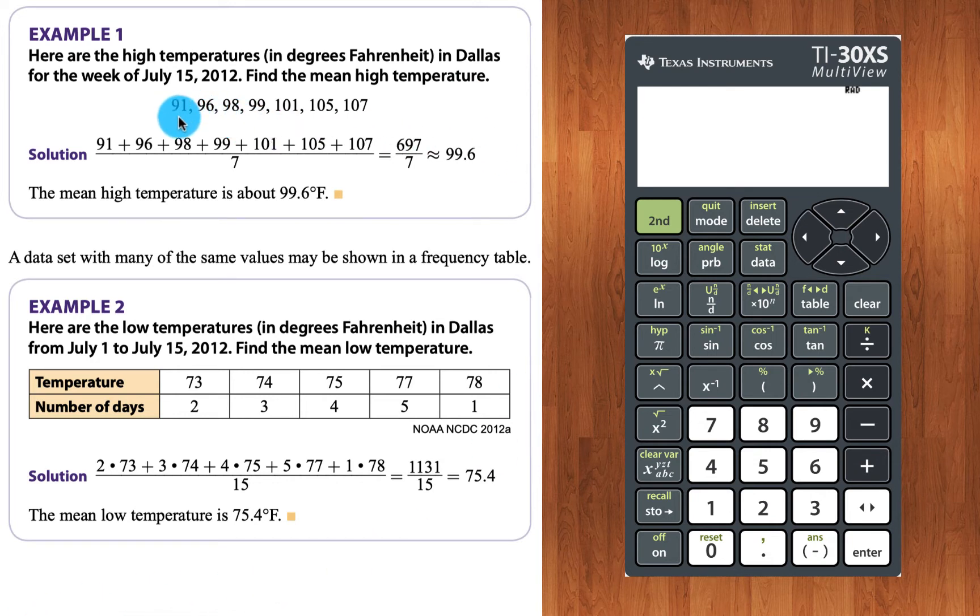I want to show you how you can take these numbers right here, 91, 96 and so forth, and have the calculator automatically compute the average. So you can start here by going into data and you'll notice that there are some tables here. Up here it says L1, L2, L3 and then you can just type in the data here, 91, hit enter, 96 and I'm going to speed through this.